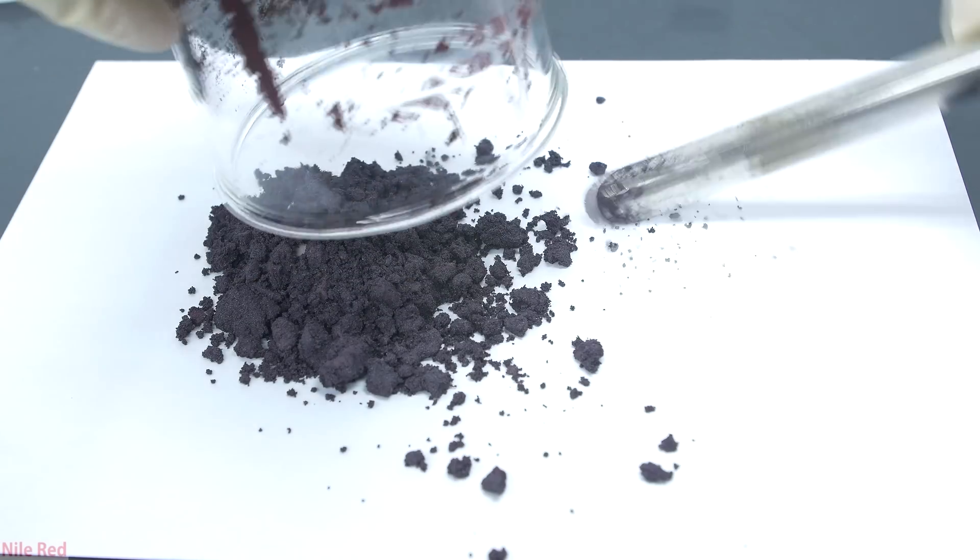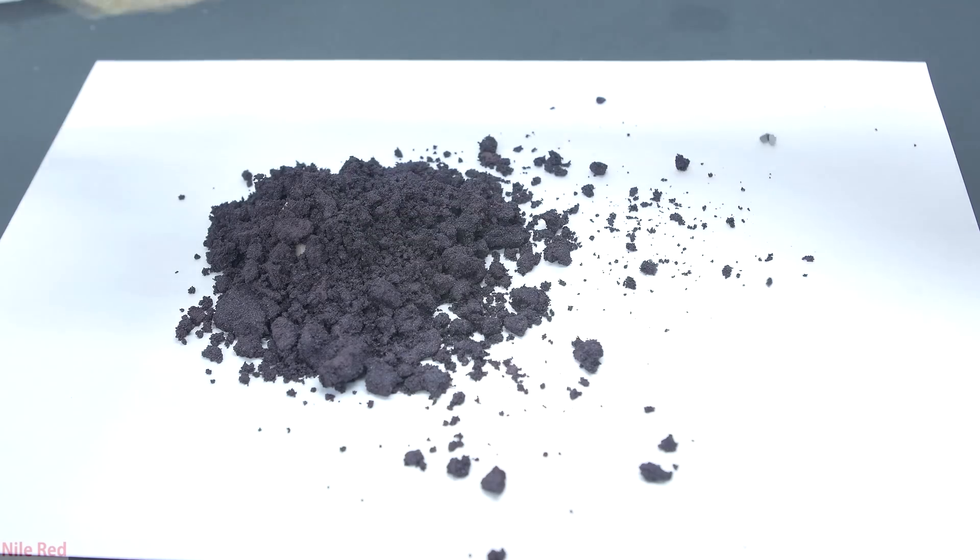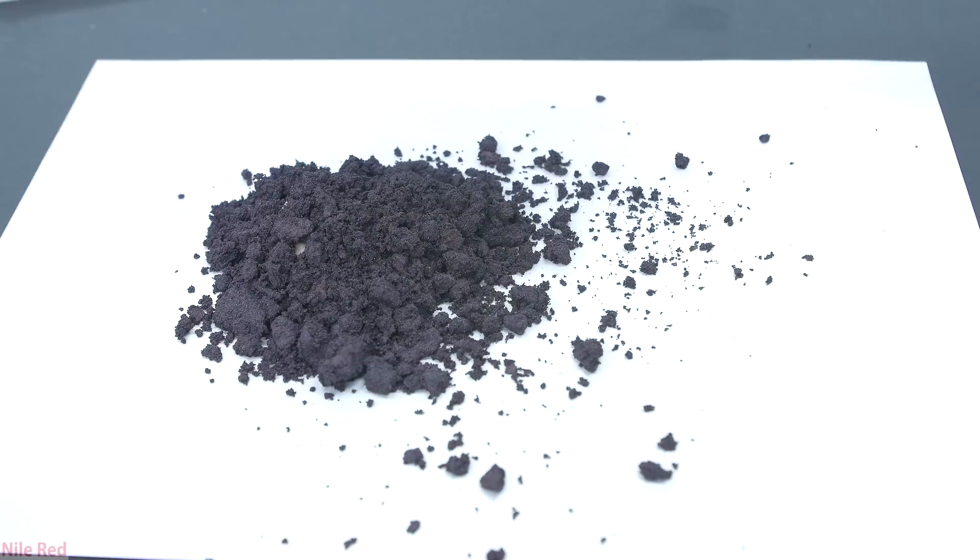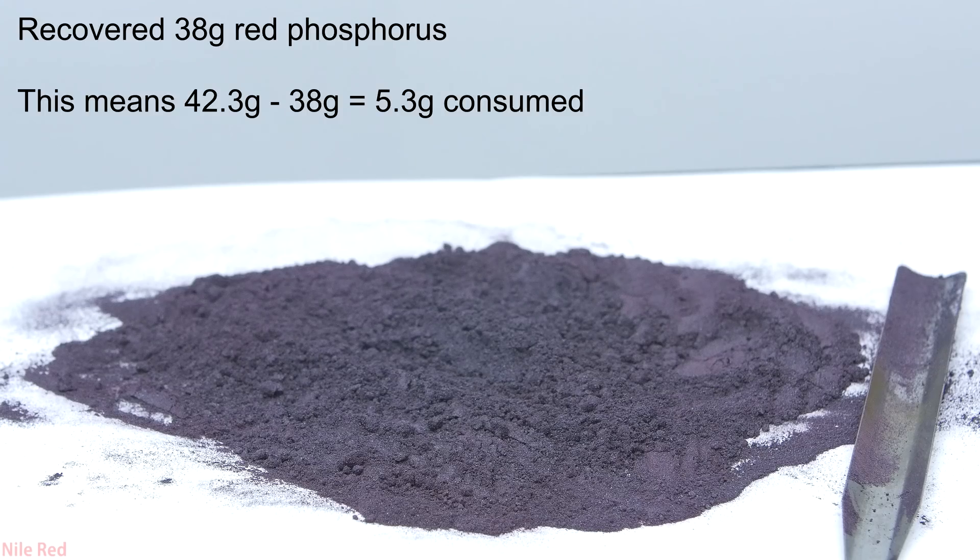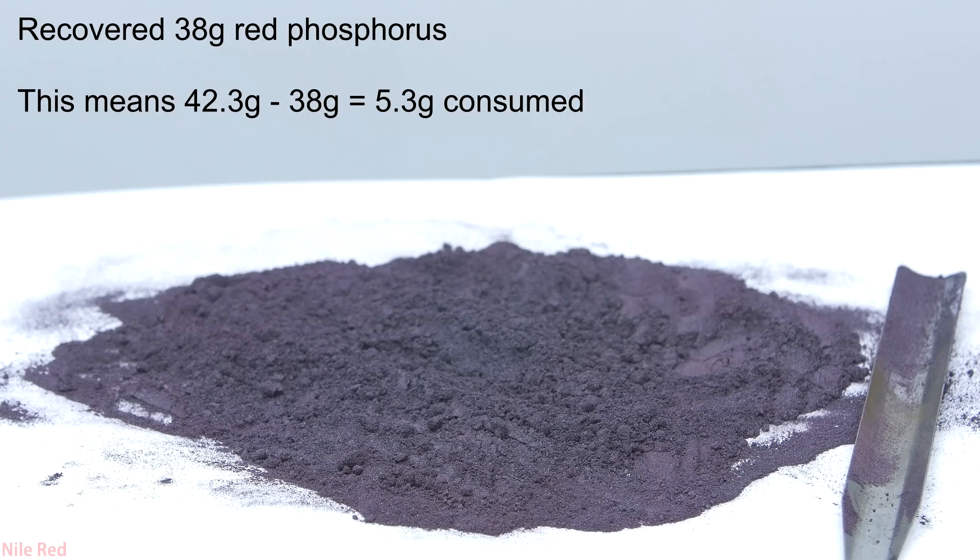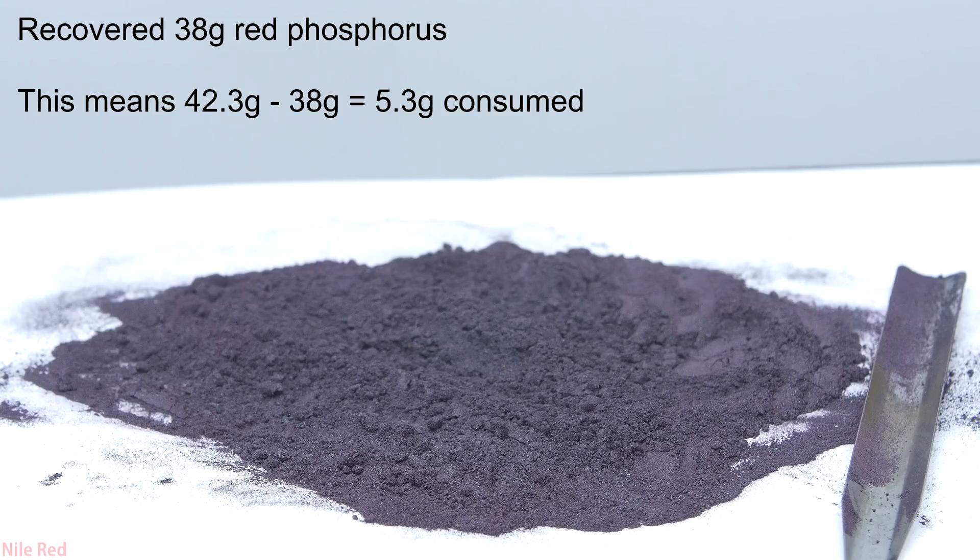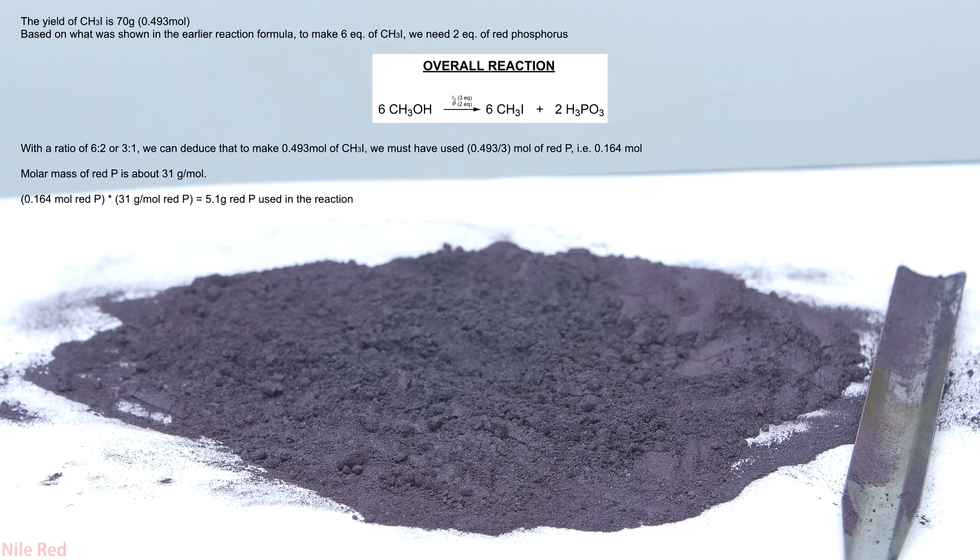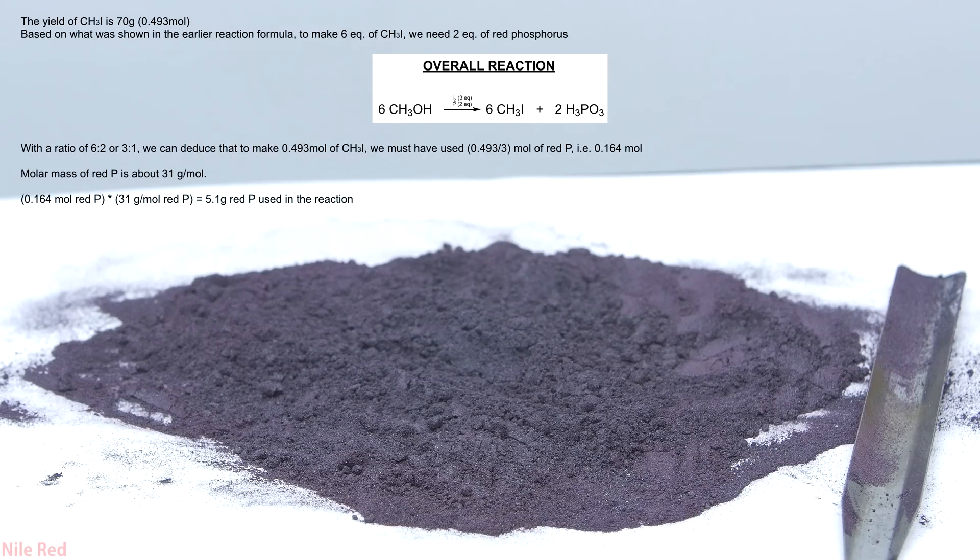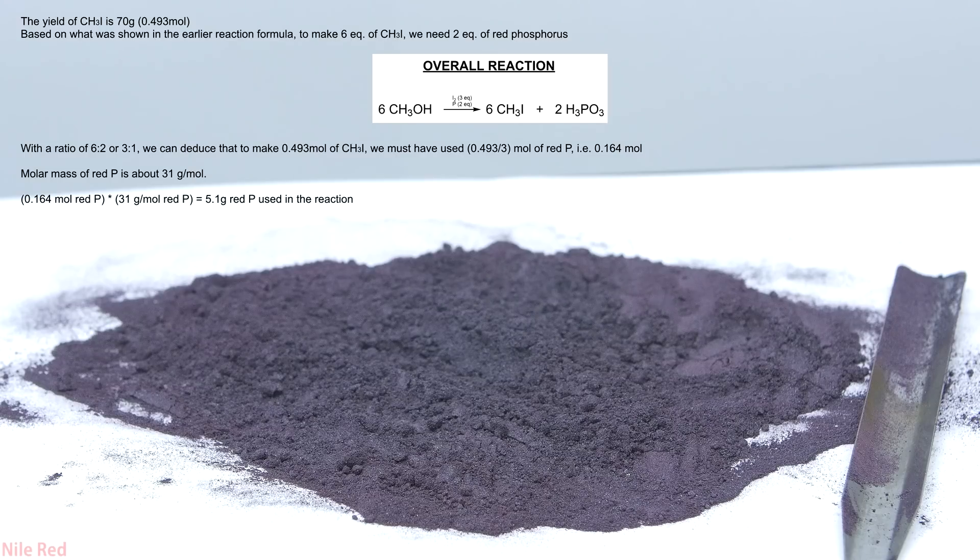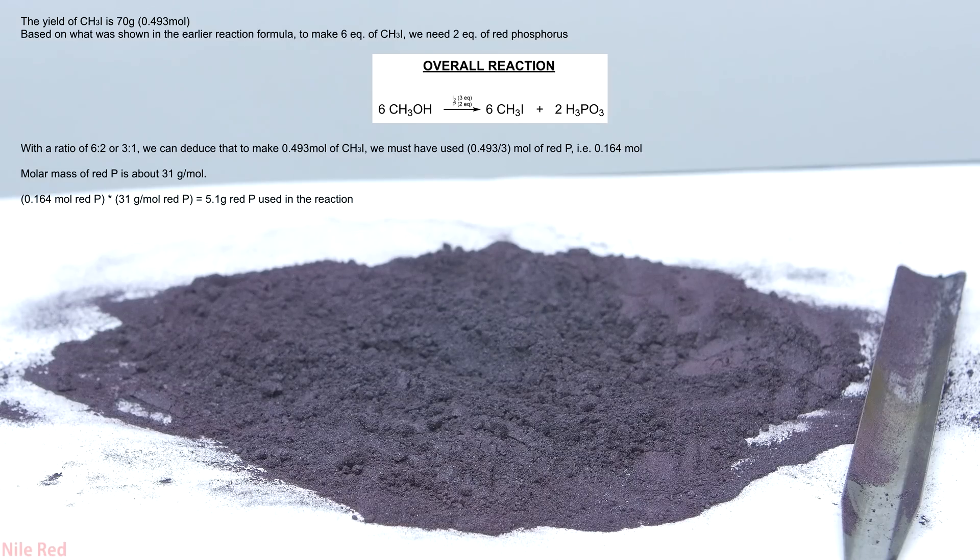Right now the red phosphorus here is still a little bit wet, so I simply leave it out in air to dry and then weigh it to see how much we recovered. In the end, the recovery of the red phosphorus was about 38 grams, which means that only about 5 grams of red phosphorus was lost in the reaction. This makes sense, and if we calculate how much red phosphorus we should have used based on how much methyl iodide we produced, it comes out to be around 5 grams.